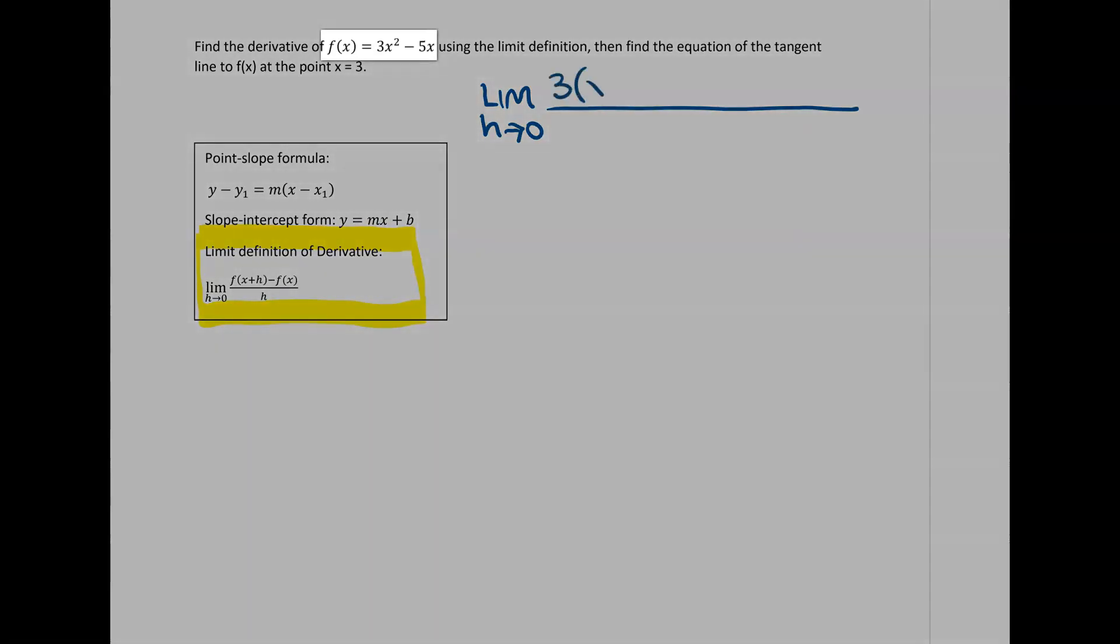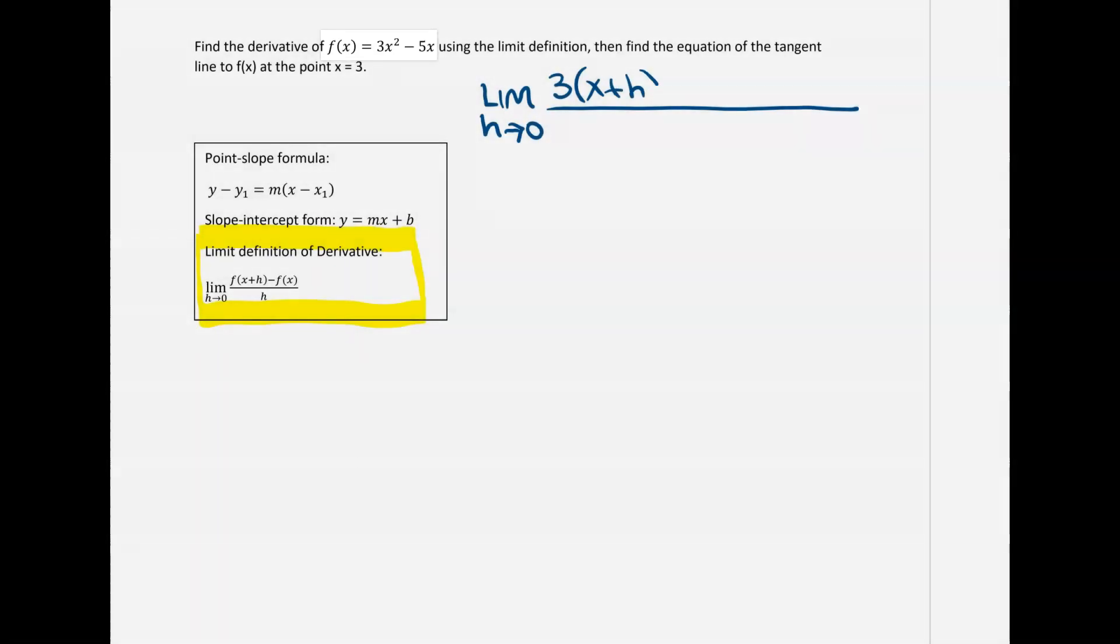So we have 3, we have x plus h. Plug that in squared minus 5 and then we have x plus h plugged in there. And then we subtract from that f of x which is just the given function, 3x squared minus 5x. And then that whole thing goes over h.